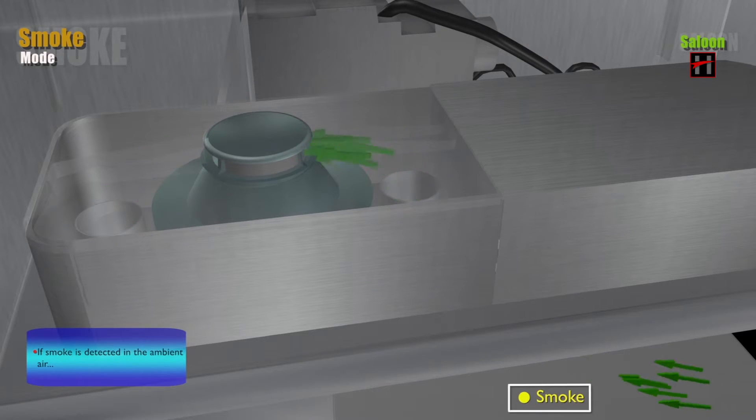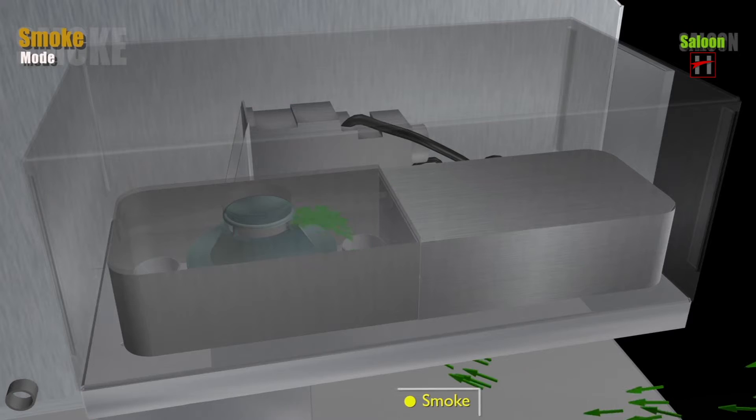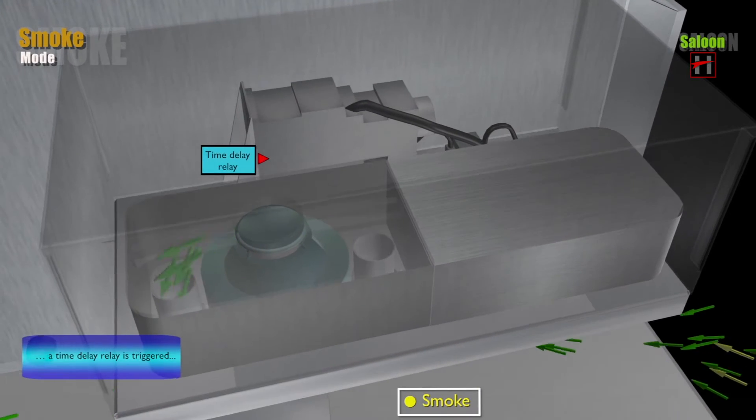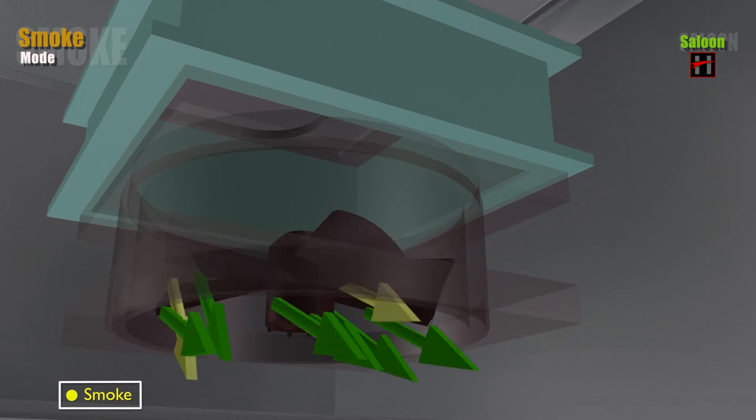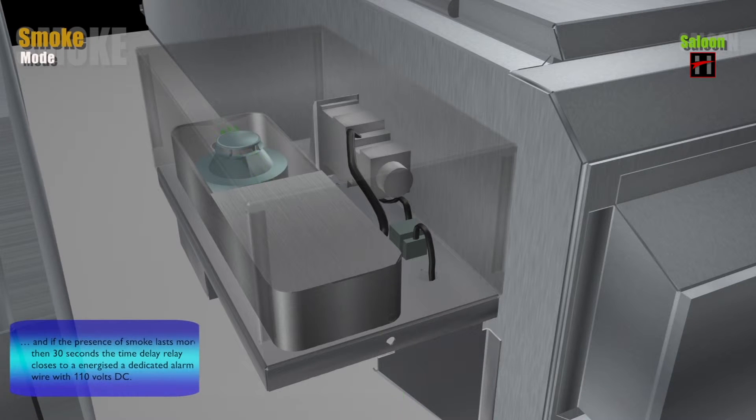If smoke is detected in the ambient air, a time delay relay is triggered, and if the presence of smoke lasts more than 30 seconds, the time delay relay closes to energize a dedicated alarm wire with 110 volt DC.